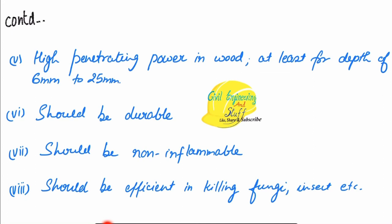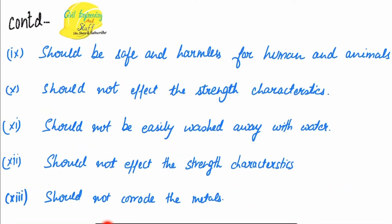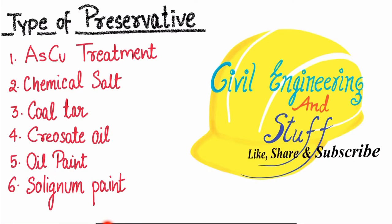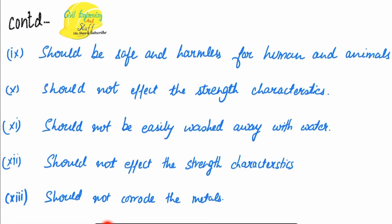The application of preservatives should not hamper the strength and durability of the timber, and the preservative should be non-inflammable and efficient in killing fungus and insects — capable enough to protect the timber surface. The preservative should be safe and harmless to humans and pet animals. It should not wash away upon application of water and should remain intact and efficient. Additionally, the preservative should not corrode any metals embedded in the timber surface.